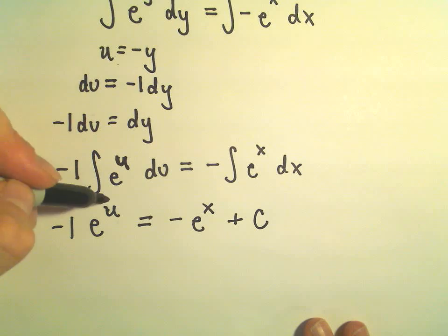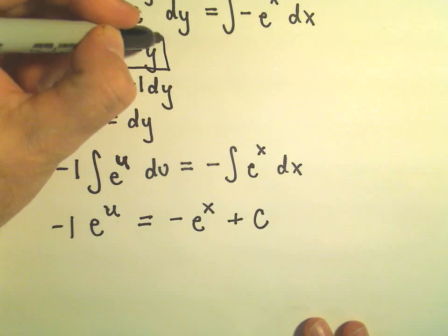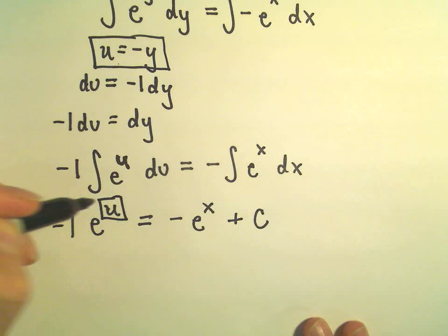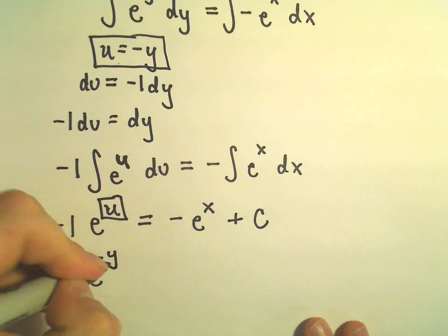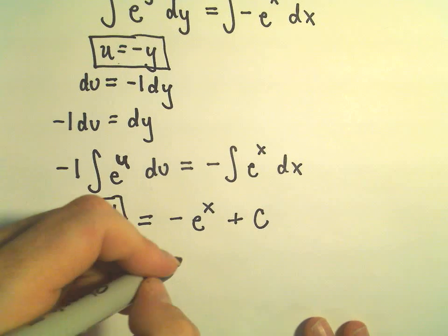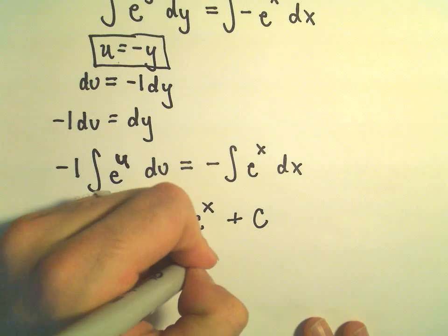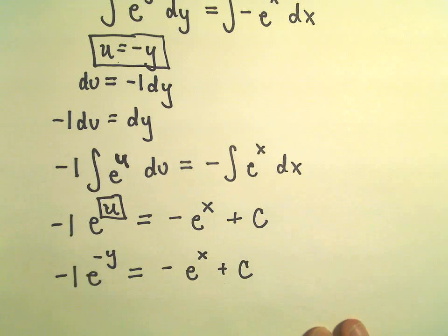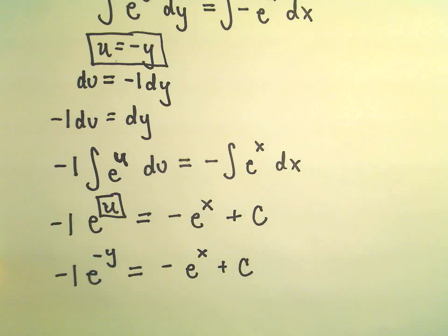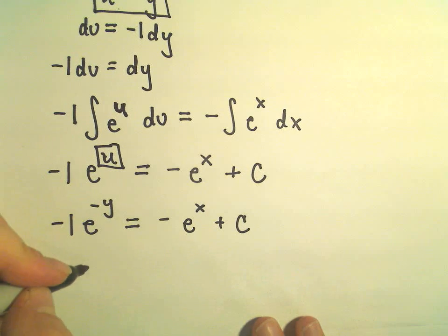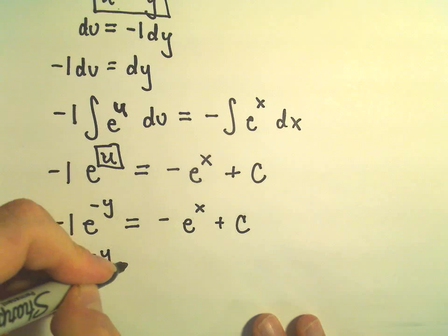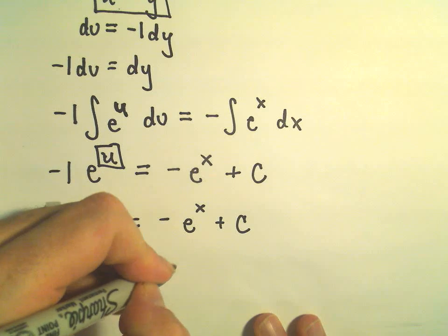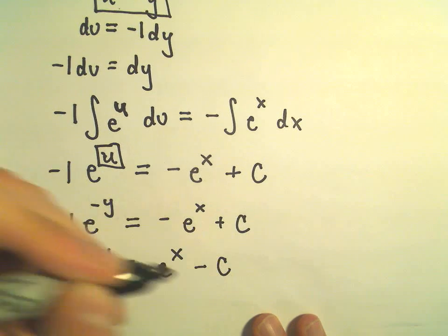I'm going to replace the fact that u here is simply equal to negative y, so I'm going to plug that in. So we'll get negative e to the negative y equals negative e to the x plus c. And if we want to, we can multiply both sides here by negative 1. So that will give me e to the negative y equals positive e to the x minus c.